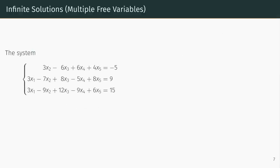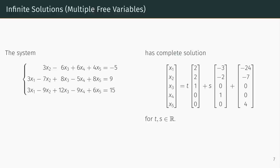Having done this, we say that the given system has complete solution x1 through x5 equals t times (2, 2, 1, 0, 0) plus s times (minus 3, minus 2, 0, 1, 0) plus (minus 24, minus 7, 0, 0, 4) for t and s in the real numbers. That is, picking values for t and s produces solutions to the original system, and every solution to the original system can be obtained by some choice of t and s. Note that when writing complete solutions in vector form, it is tradition, but not required, to write vectors whose coefficients are parameters at the beginning of the equation.